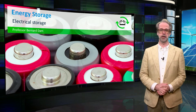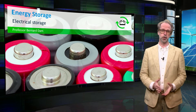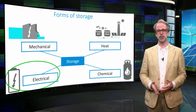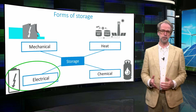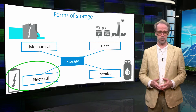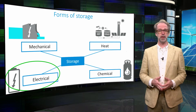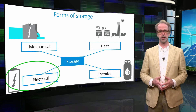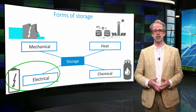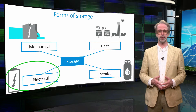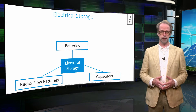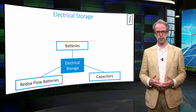One of the most common ways of storing energy is of course using batteries. Batteries exist in many forms and flavors, however they are in fact just one type of electrical storage. As compared to the mechanical and heat storage principles discussed in the previous videos, electrical storage is different in that it does not involve mechanical conversion steps to retrieve the electricity. Here we will discuss three forms of electrical storage.